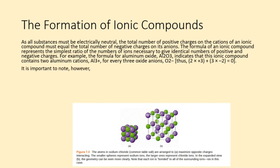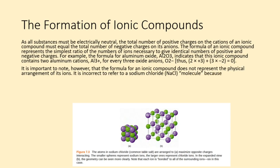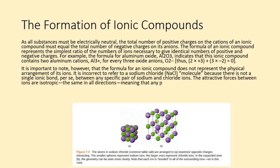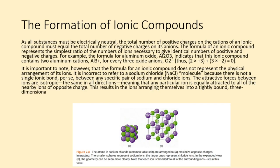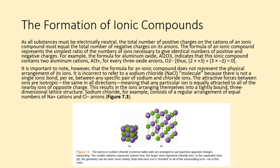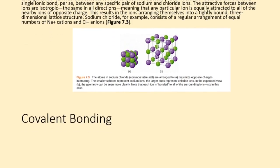It is important to note, however, that the formula for an ionic compound does not represent the physical arrangement of its ions. It is incorrect to refer to a sodium chloride molecule because there is not a single ionic bond, per se, between any specific pair of sodium and chloride ions. The attractive forces between ions are isotropic, the same in all directions, meaning that any particular ion is equally attracted to all of the nearby ions of opposite charge. This results in the ions arranging themselves into a tightly bound, three-dimensional lattice structure. Sodium chloride, for example, consists of a regular arrangement of equal numbers of Na+ cations and Cl- anions, figure 7.3.